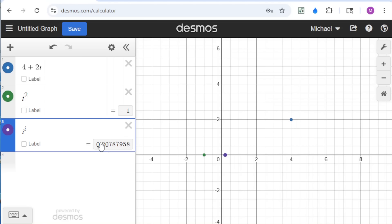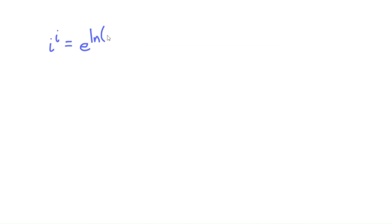So what's going on here? Why is i to the i this decimal? The quick explanation is that we can write i to the i as e to the natural log of i to the i. Then we can take this i and bring it out front, and rewrite this as e to the i times natural log of i.